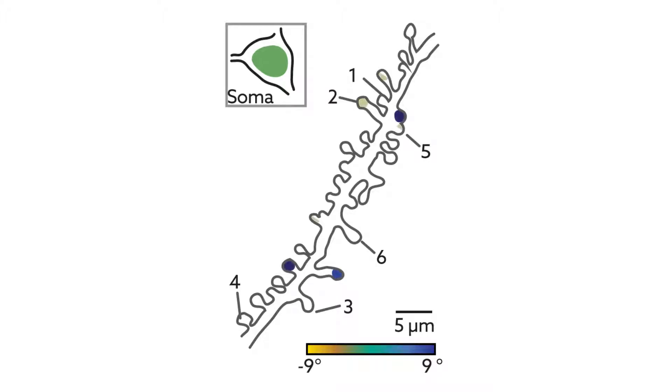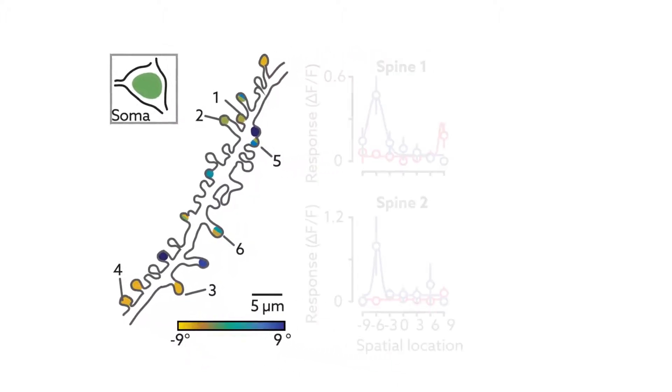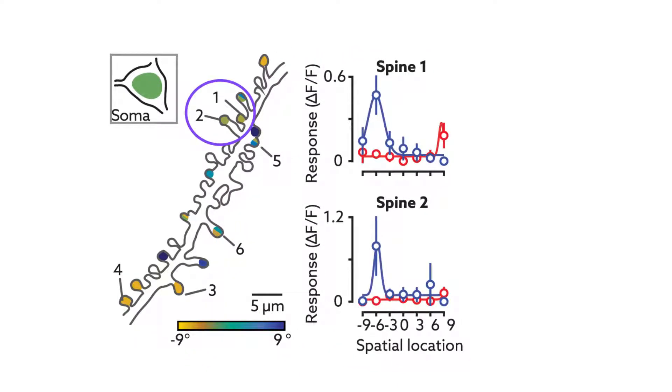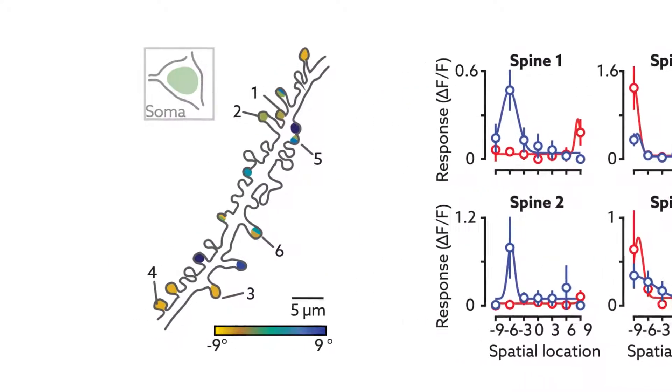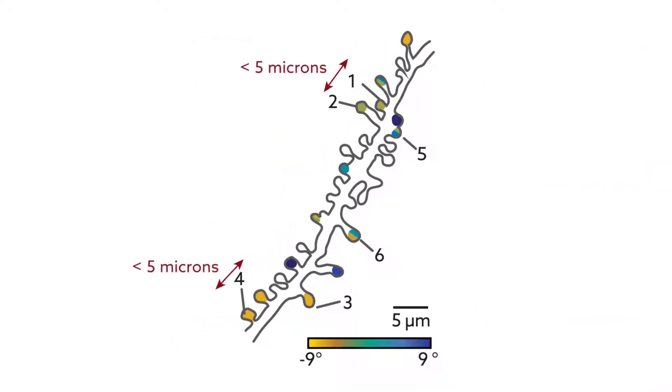Within individual dendrites, spines with similar responses were often neighbors. Sometimes they were on the same side of the dendrite shaft. Sometimes they were across from one another. Either way, they were consistently less than 5 microns apart.